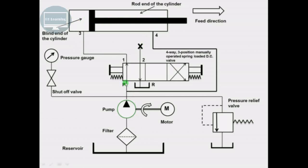Apart from the pump flow, the fluid from the rod end of the cylinder also gets added to the pump flow. Therefore, the volume of fluid supplied to the blind end of the cylinder is greater than the pump flow rate, and the speed of extension of the piston is greater than the retraction speed.